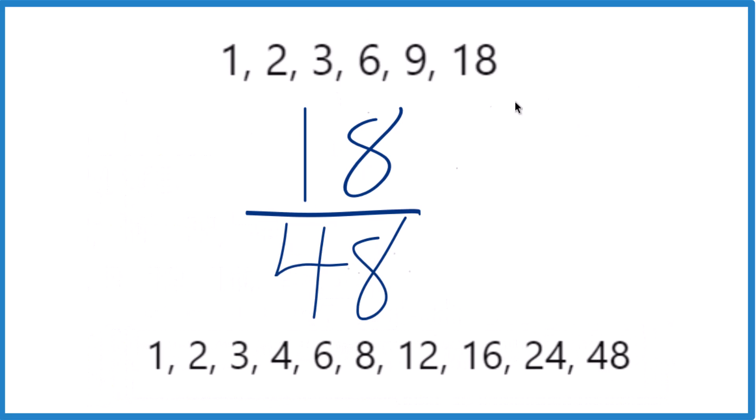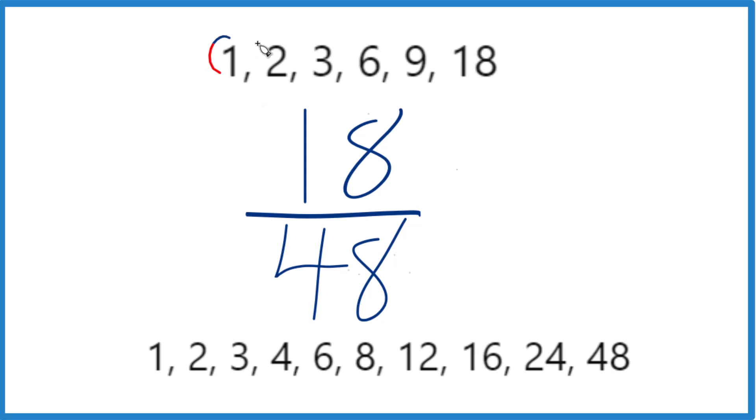So let's see if we can find a common factor, the greatest common factor—a whole number that goes into 18 evenly and 48 evenly. 1 is a common factor, 2 is a common factor, 3, and then 6 is a common factor. 9 is not, and 18 is not. So it looks like 6 right here. This is the greatest common factor.